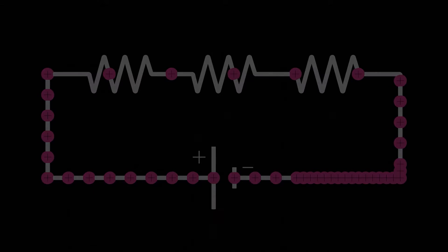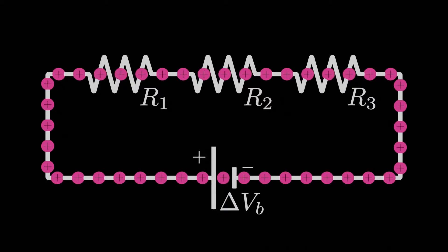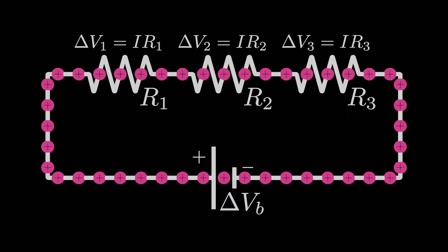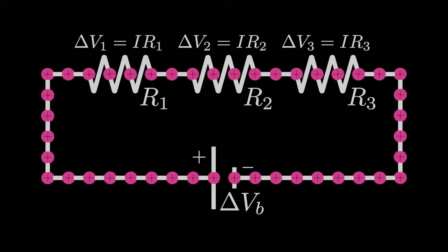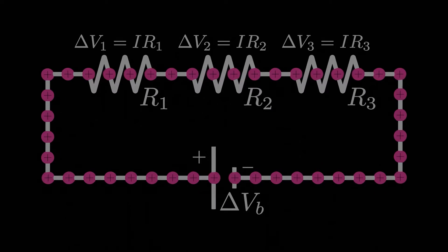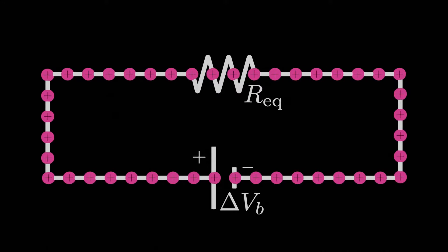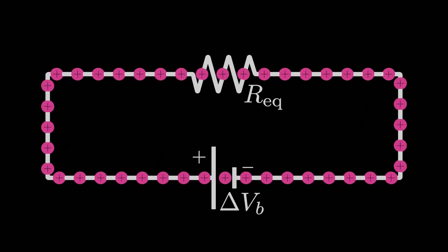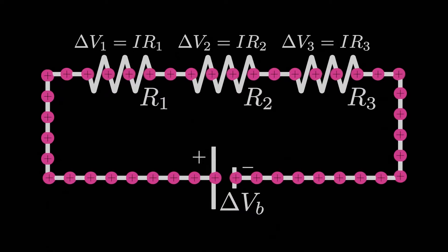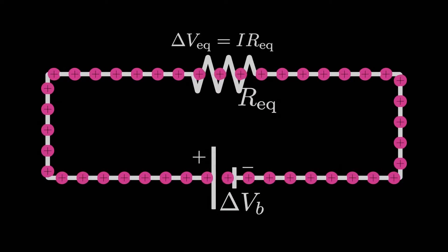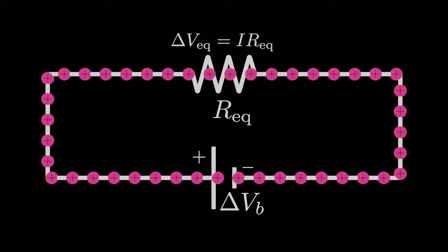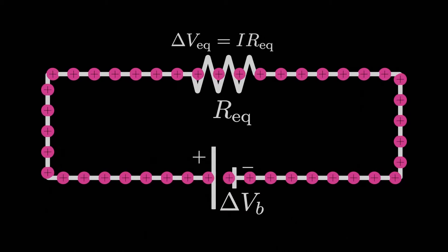So if the current is the same through each of the resistors, we can write the magnitude of the potential difference across the first resistor as I times R1, across the second as I times R2, and so on for the third. What we want to do is turn this combination of three resistors in series into an equivalent resistor — one whose resistance is the same as the entire series combination. The current through the equivalent resistor must be the same as through each series resistor, and the potential difference across it must equal the potential difference across the entire series combination.